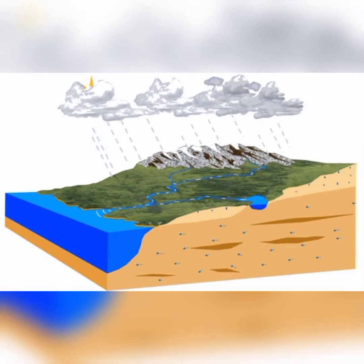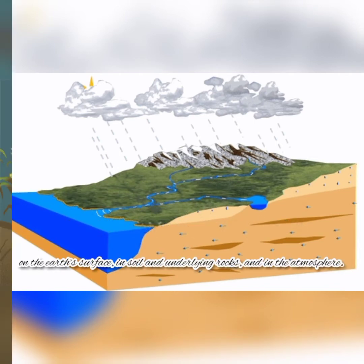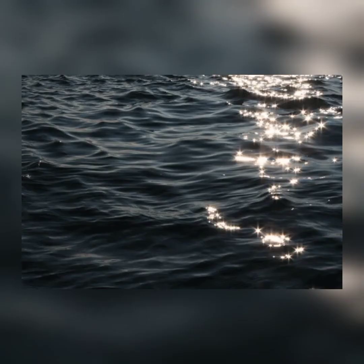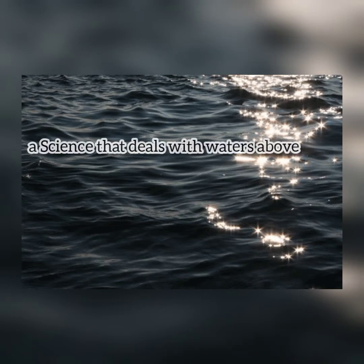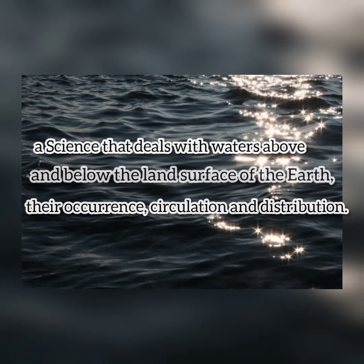Once again, hydrology as defined in past lessons is the scientific study of the properties, distribution, and effects of water in the Earth's surface, in soil, in underlying rocks, and in the atmosphere. UNESCO and WMO define hydrology as a science that deals with water above and below the land surface of the Earth, their occurrence, circulation, and distribution.